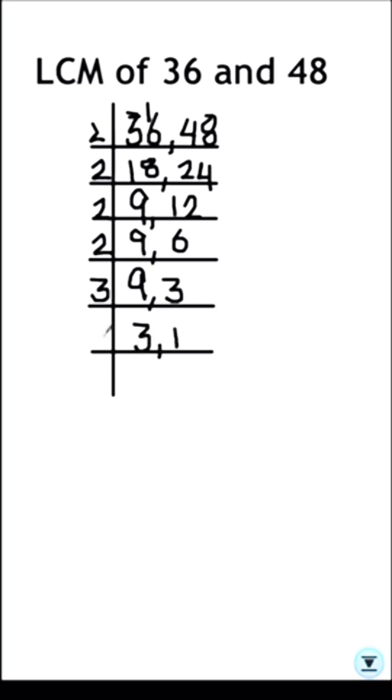And 3 times 1 is 3. To find the LCM of the two numbers we are going to take the product of all the numbers which are on the left hand side of the ladder.